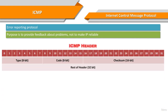The ICMP header starts after the IPv4 header. All ICMP packets have an 8-byte header and variable-sized data section. The first four bytes of the header have a fixed format, while the last four bytes depend on the type and code of that ICMP packet.